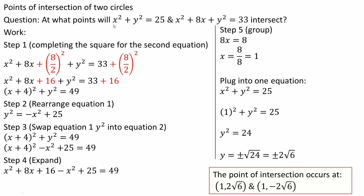So x = 1. Plugging x = 1 into the first equation: 1² + y² = 25, so y² = 24. Taking the square root of both sides gives y = ±√24. Since 24 = 4 × 6, we simplify to y = ±2√6.